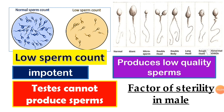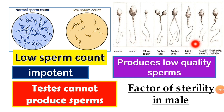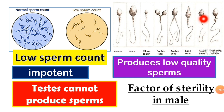Now we are focusing on sterility in males. The first factor is low sperm count. On the left you can see the number of normal sperm, and on the right is the low sperm count — the number is less. The testes cannot produce sperm. We also have a photo of low quality sperm: from the left, this is the normal quality sperm, then giant, micro sperm, double head — you can see two heads — double body, long head, rough head, and abnormal middle. These are all low quality sperm that can cause sterility in males.